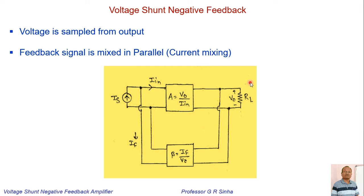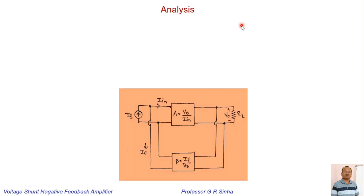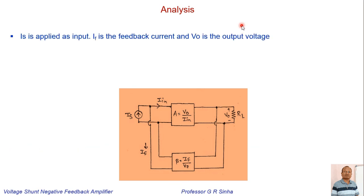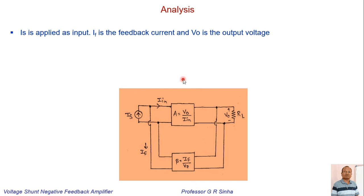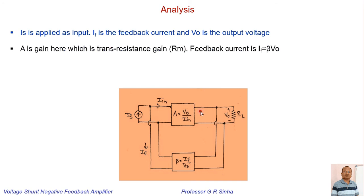So the output signal that is sampled is voltage, and it is mixed in a parallel or shunt manner. We call this topology the voltage shunt negative feedback amplifier. When analyzing any feedback amplifier, we try to determine the current gain, voltage gain, or gain of the amplifier, as well as input and output impedance. Here, IS is applied as input, IF is the feedback current, VO is the output voltage, and A is the gain shown in the block diagram.